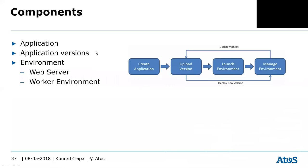You have three components: application, versions, and environments. You have two different types of environments: web server and worker. The drill is: first create an application, upload it to Beanstalk — you can have multiple versions stored — then launch your environment deploying your application. Once you have a new version, you can upload it and deploy again.